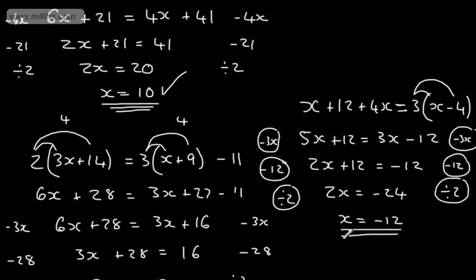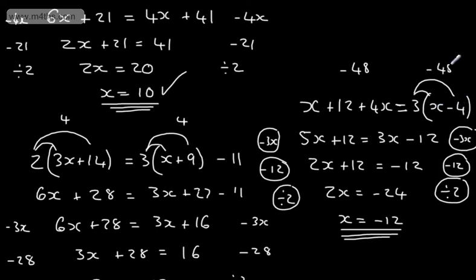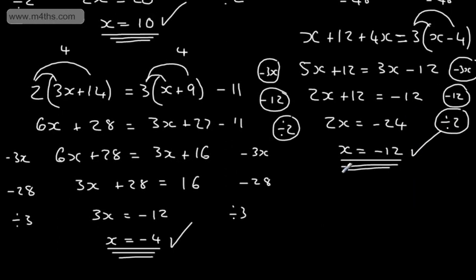Plugging negative 12 back in on the left: negative 12 plus 12 gives 0, plus 4 lots of negative 12 gives negative 48. On the right, negative 12 minus 4 gives negative 16, and 3 lots of negative 16 gives negative 48. So we can see it holds true — solving equations with unknowns on both sides.